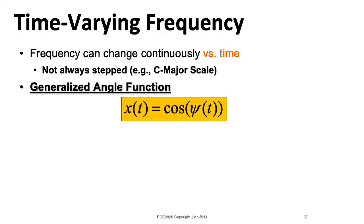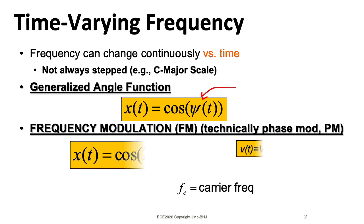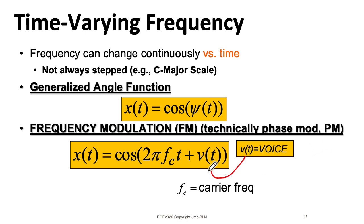So we're now going to think about functions with a generic angle function, psi of t. This can be fairly flexible. Often it may embed a signal that we want to encode and transmit. Now what I'm showing here is technically not frequency modulation, as you would think about it on your FM radio.